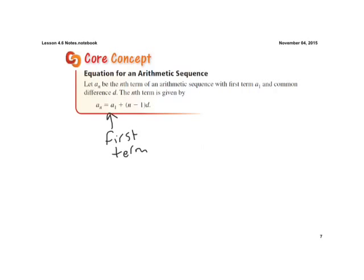Again, n is the number of terms. And d, this is where that common difference comes into play. Okay, so we look for our common difference.